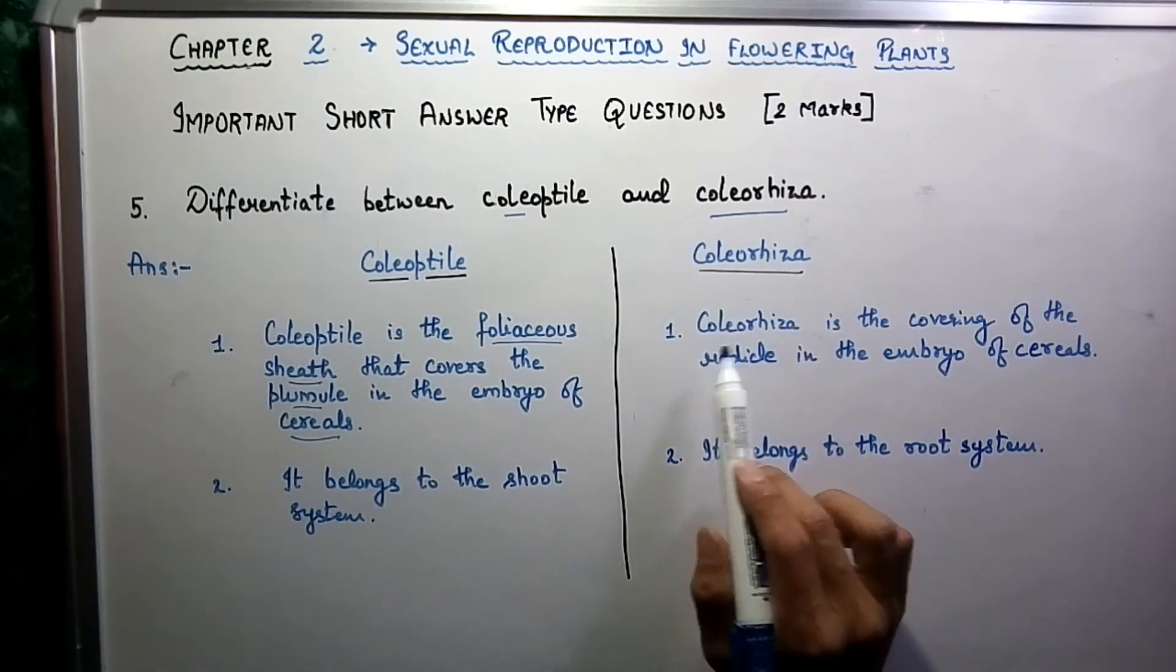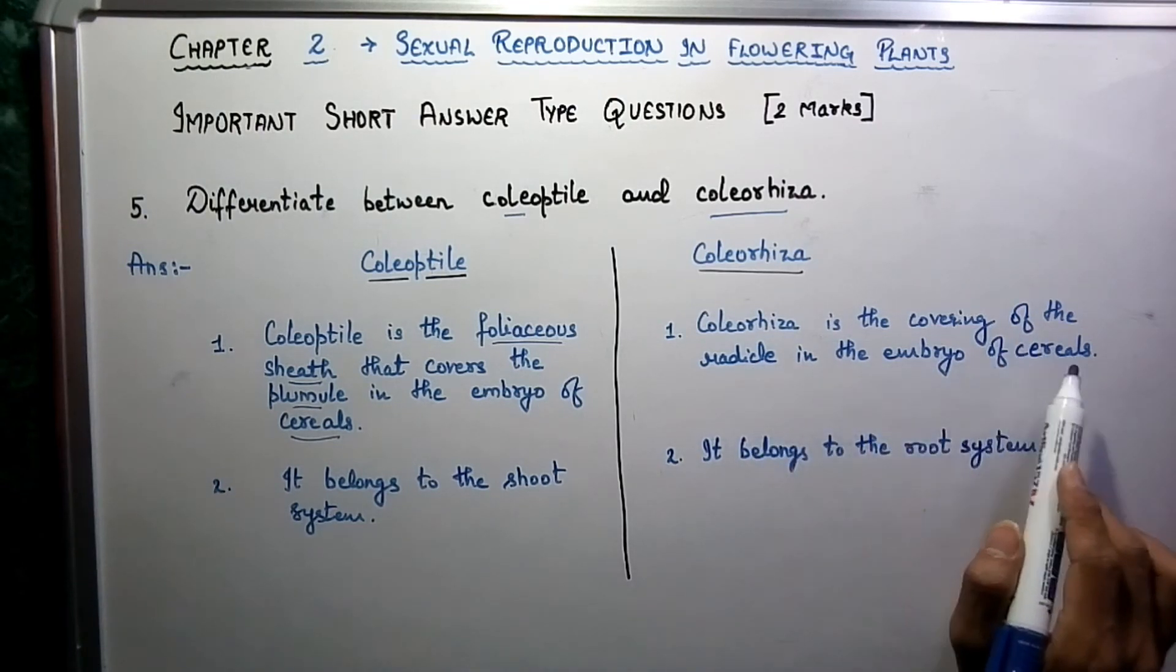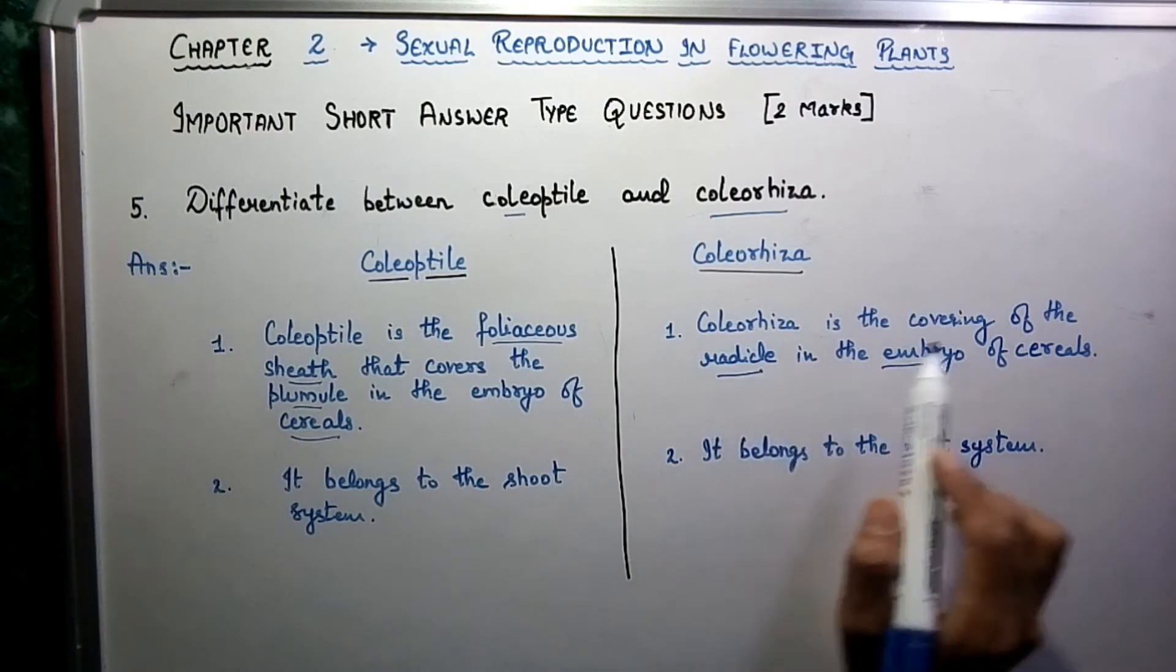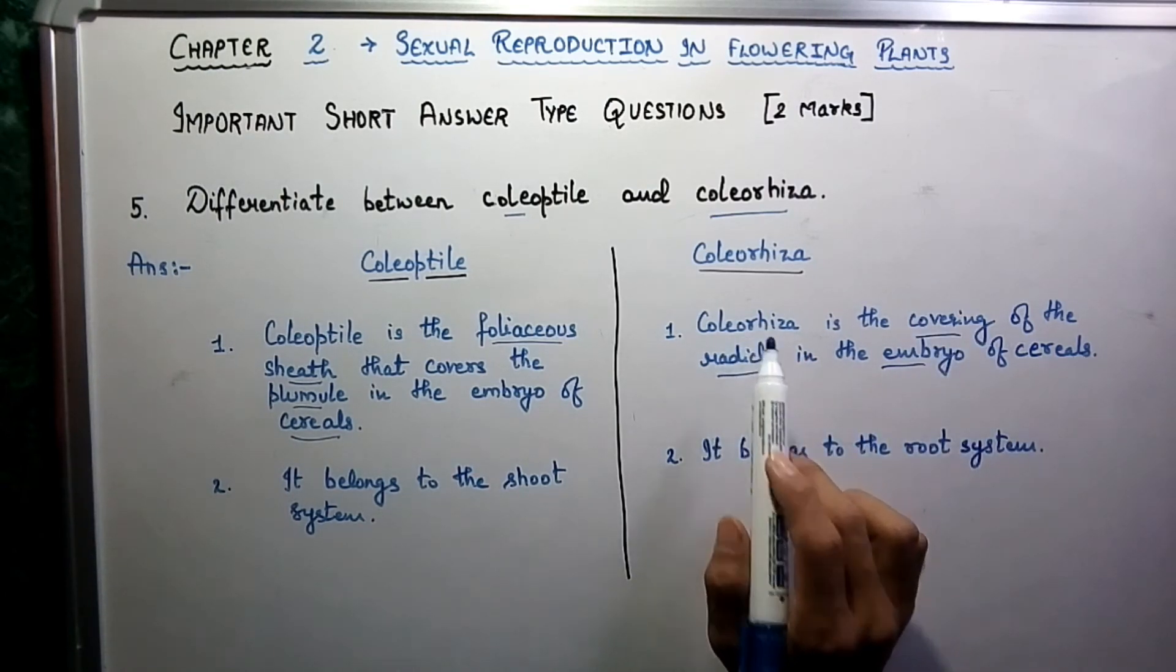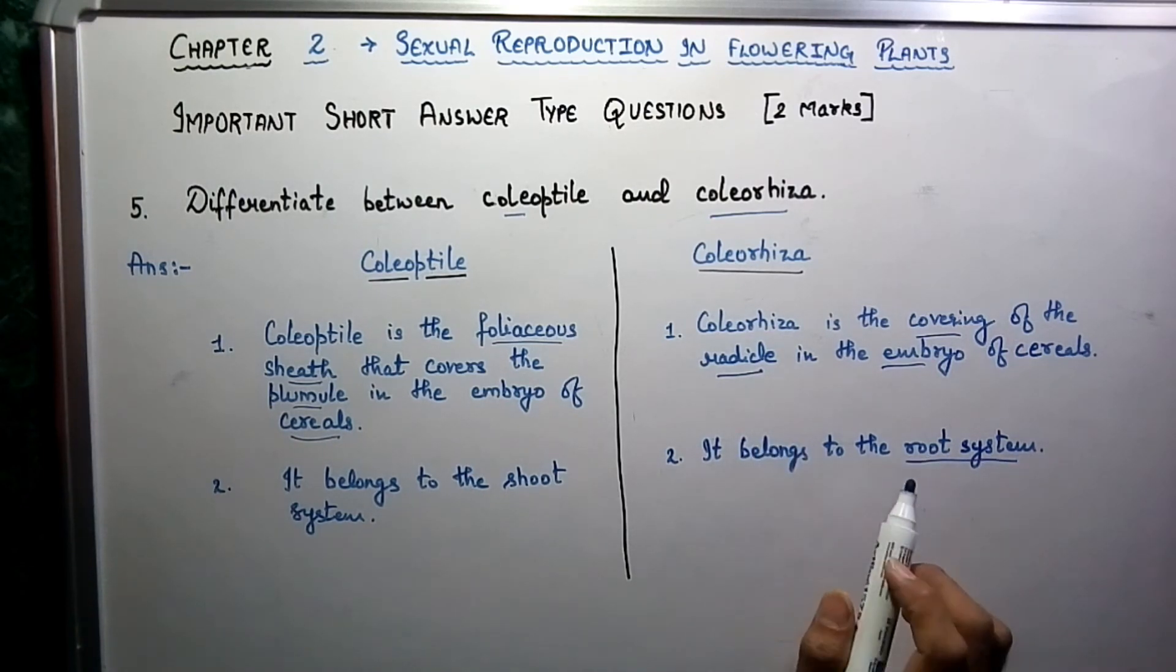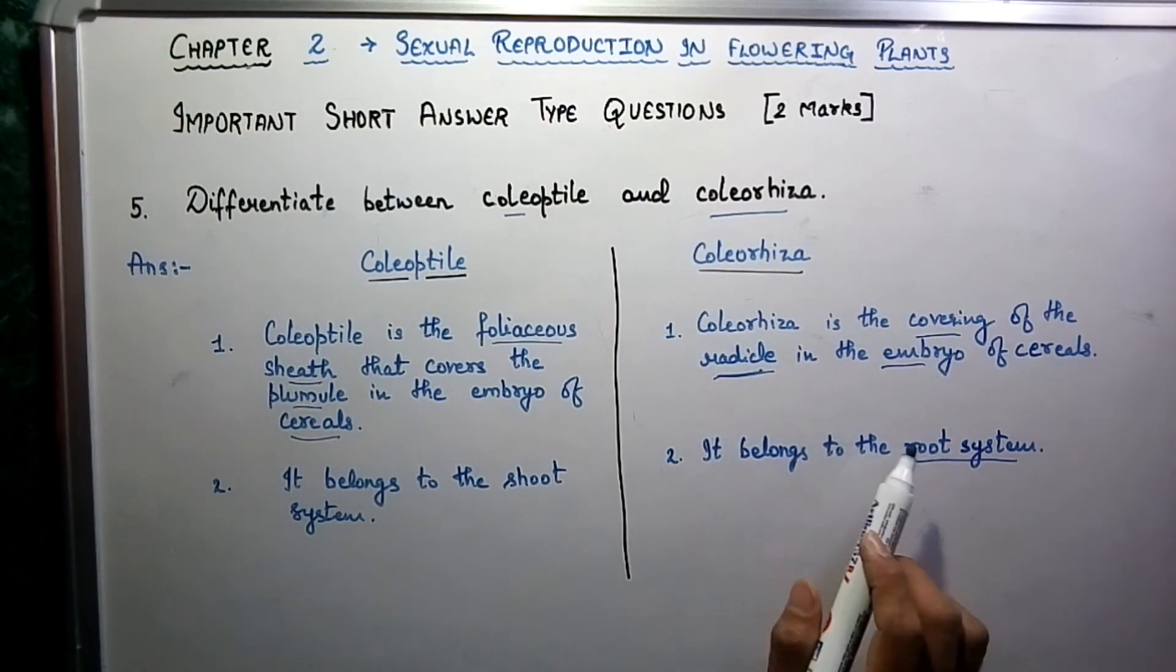Coleorhiza is the covering of the radicle in the embryo of cereals. The covering of the radicle is called coleorhiza, and this coleorhiza follows the root system. The radicle develops the root system. So coleoptile is your shoot system and coleorhiza is the root system.